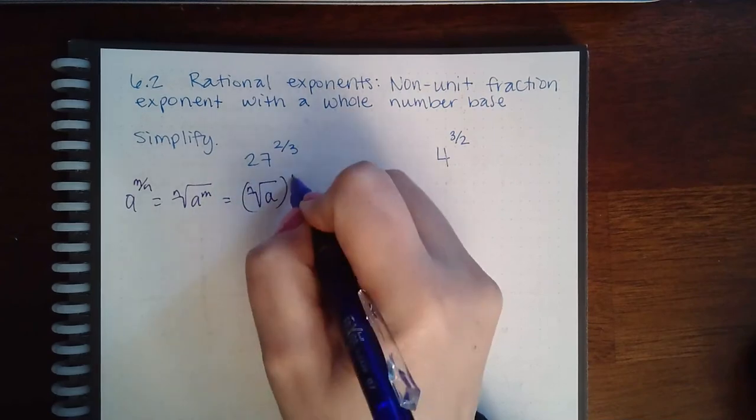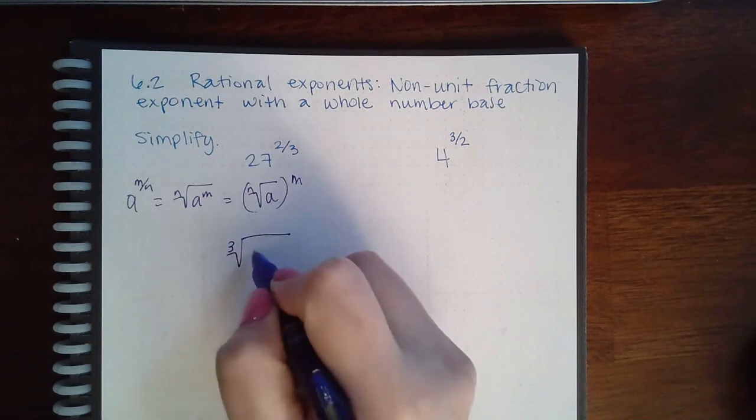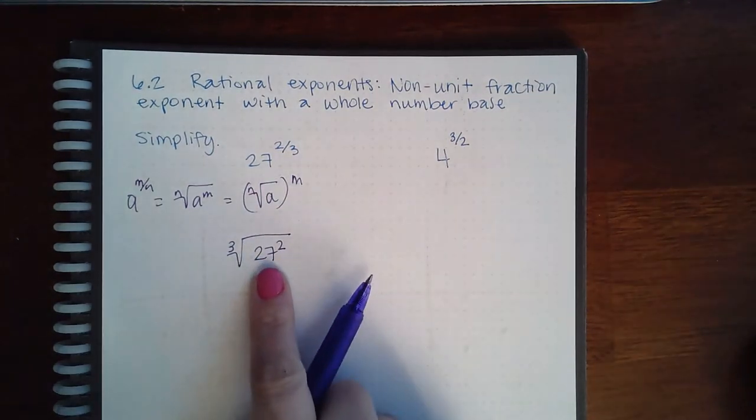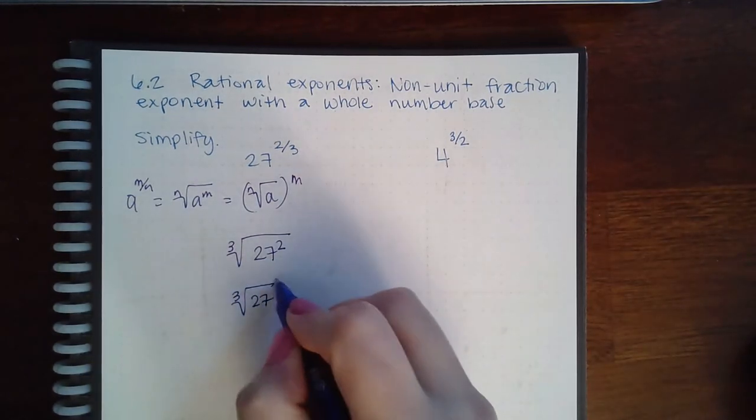And the reason why is because if I were to convert this into 27 squared, this is going to become an extremely large number. So it would be beneficial to do this first and then square.